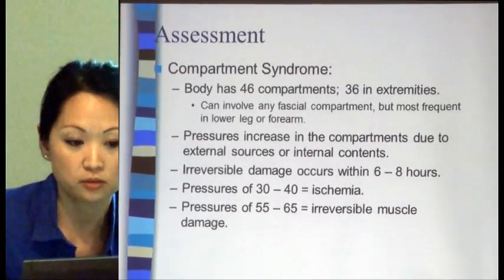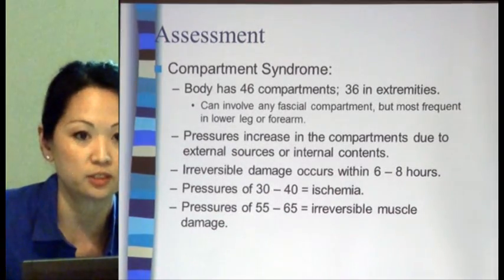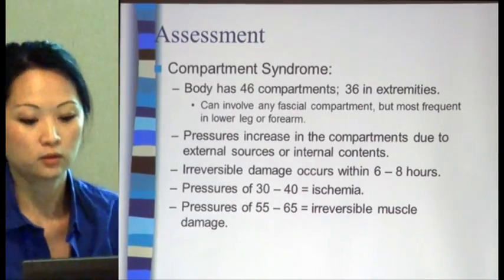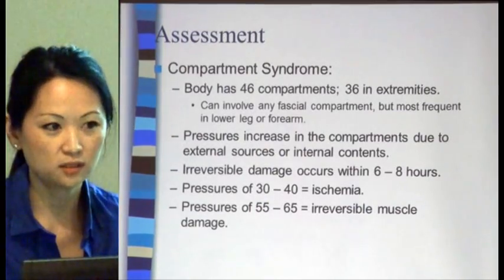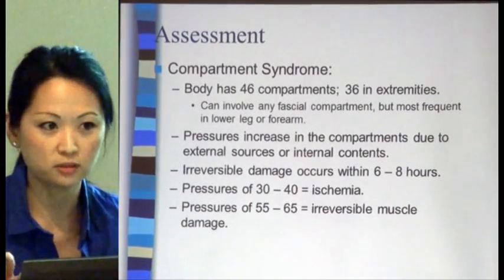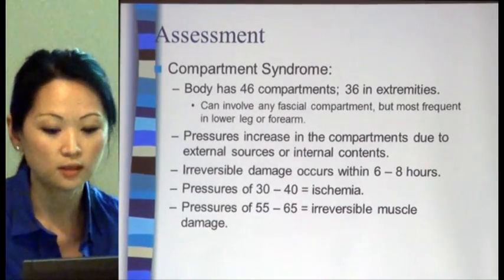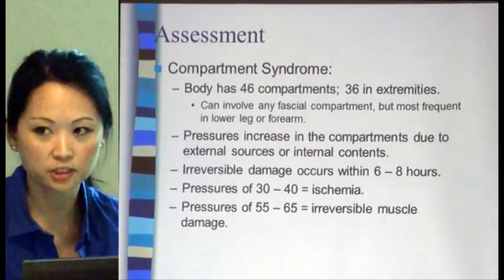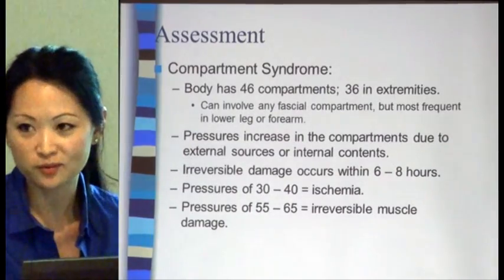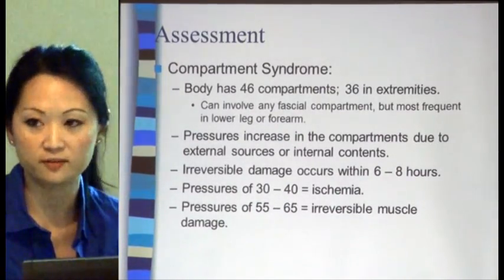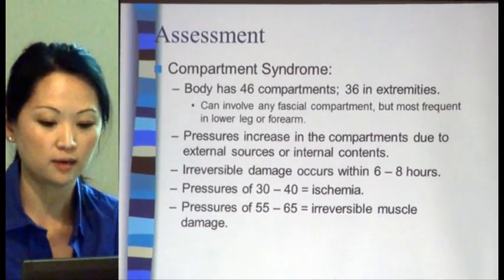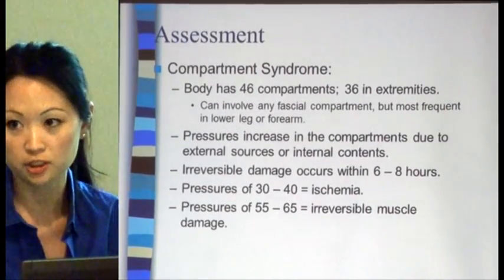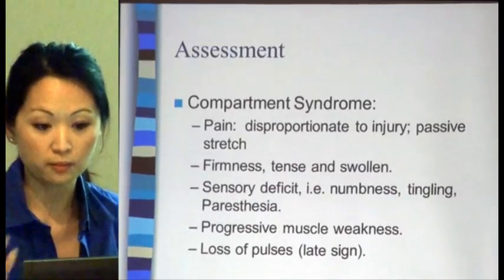It's important to assess for compartment syndrome because the damage can be irreversible if it's greater than six to eight hours. When checking pressures: 30 to 40 mmHg is considered where ischemia is present, and 55 to 65 mmHg is where you see irreversible muscle damage. That number isn't set in stone because we allow for permissive hypotension, so the threshold may be lower.